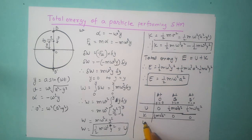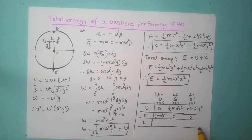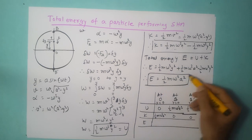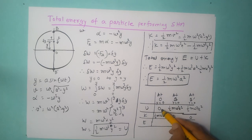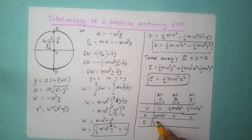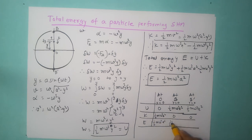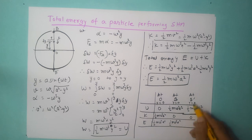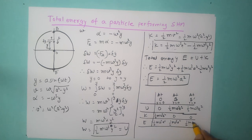The total energy is the sum of kinetic and potential energy. At O we get half m omega squared a squared. The same value appears at B and at B dash: half m omega squared a squared. So the total energy remains constant throughout the motion.